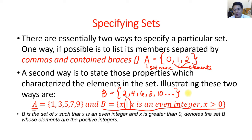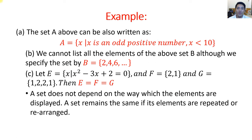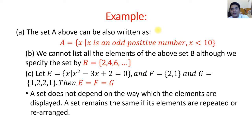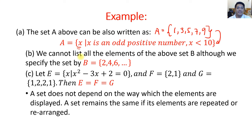So these two representations of B are the same but written in two ways: one by listing elements in braces, and the other by stating the properties that characterize the set. Similarly, set A = {1, 3, 5, 7, 9} can be rewritten as A = {x | x is an odd positive number and x < 10}, since 9 is the last member and it is less than 10.